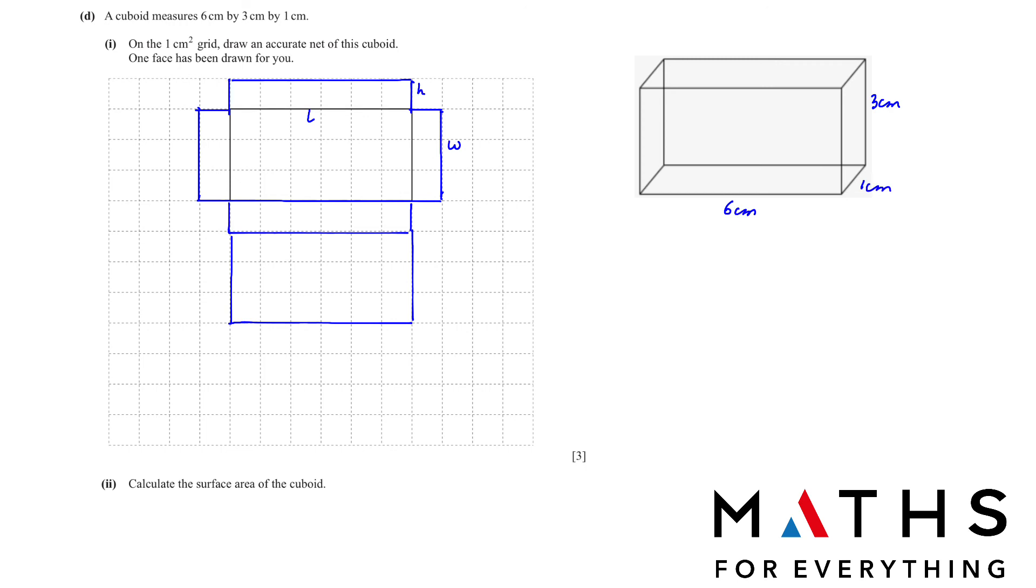Part 2, we have to calculate the surface area of the cuboid. To find the surface area of the cuboid, we have a formula: 2 times length multiplied by width plus length multiplied by height. It's not difficult to memorize. Length multiplied by width plus length multiplied by height, and then the width multiplied by height. It doesn't make a difference if you write LW or WL. Now what was our length? 6 centimeter. Width is 3 centimeter. Height is 1 centimeter. So we are going to replace now: 6 multiplied by 3 plus 6 multiplied by 1 plus 3 multiplied by 1. Put the whole thing in the calculator. This will give us 54 square centimeter.